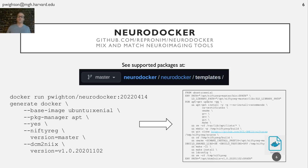For example, the NeuroDocker command on the left generates the Docker file you see on the right. And you can see a full list of the software they support in the templates directory of their GitHub repository.